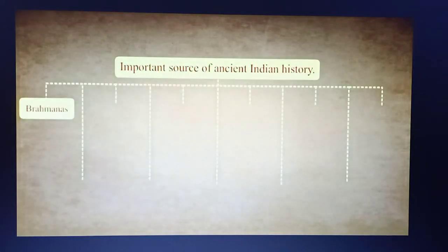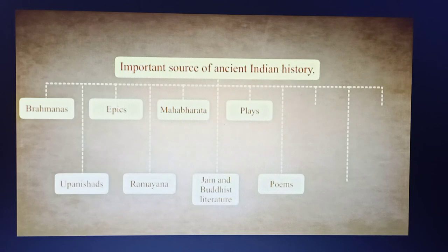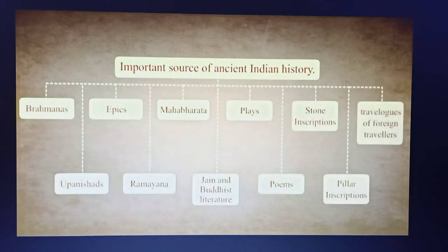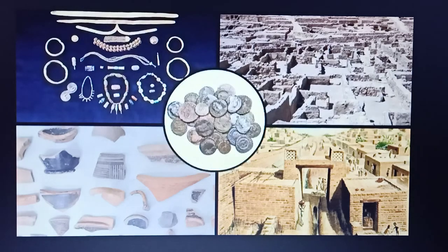The Vedas and post-Vedic literature form an important source of ancient Indian history. It includes the Brahmanas, the Upanishads, the epics Ramayana and Mahabharata, Jain and Buddhist literature, plays, poems, stone and pillar inscriptions, and travelogues of foreign travelers. We also learn about ancient Indian history through material sources like archaeological remains, ancient monuments and coins found in excavations.